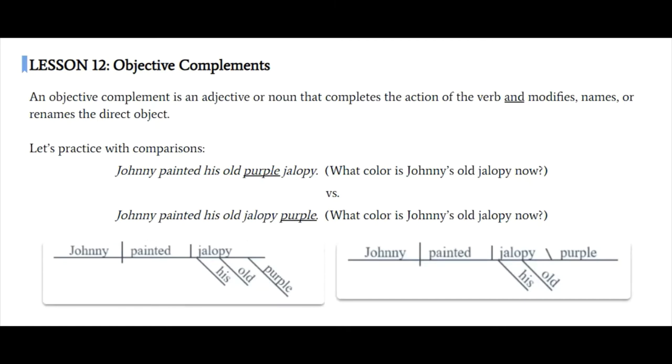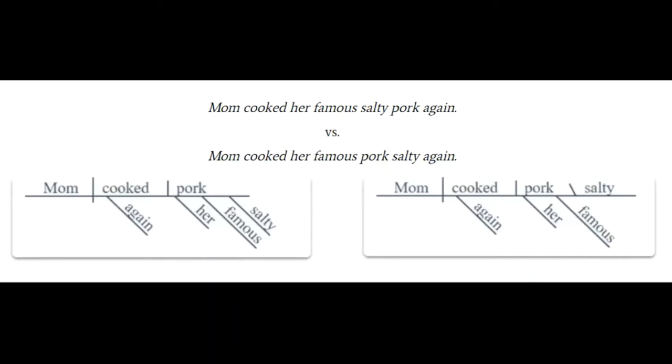Let's look at another one. Mom cooked her famous salty pork again versus mom cooked her famous pork salty again. The first sentence, salty is functioning as an adjective modifying pork, the noun, which is in the direct object position. It's telling us what kind of pork. The second sentence, salty is telling us how mom cooked the pork. Pork is the direct object because it answers the what question. Mom cooked what? Pork. Mom cooked the pork how? She cooked the pork salty.